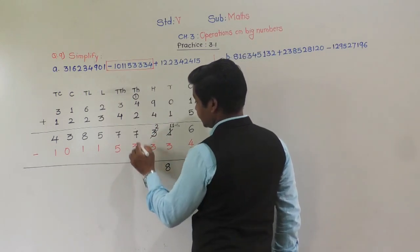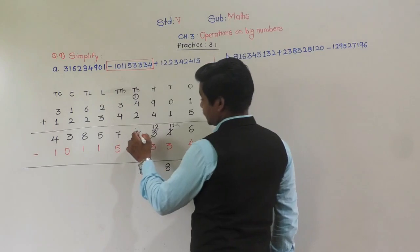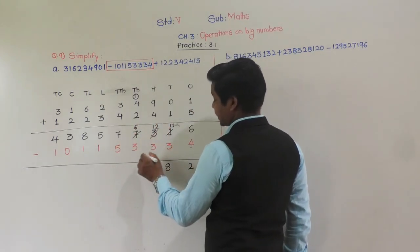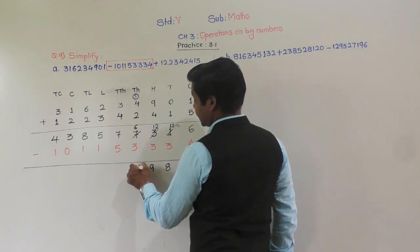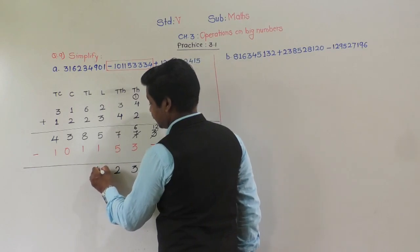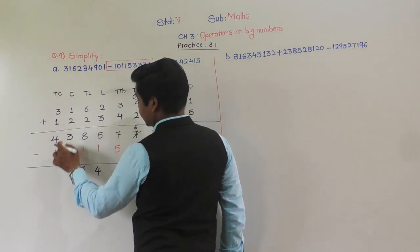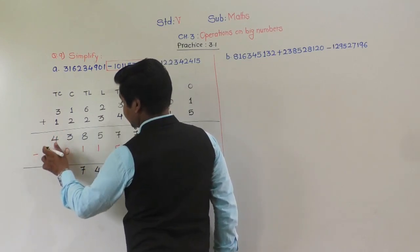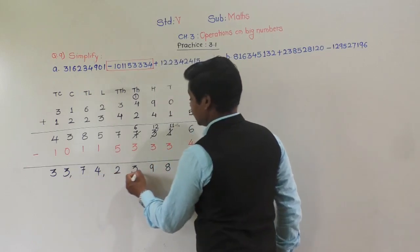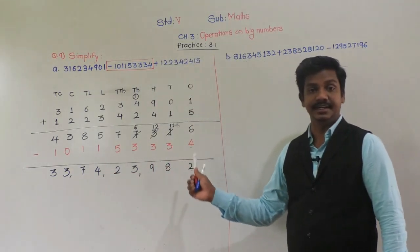Continuing subtraction: 5 minus 1 is 4, 8 minus 1 is 7, 3 minus 0 is 3, 4 minus 1 is 3. So the final answer is 33 crore 74,23,982.